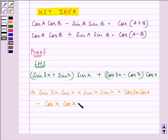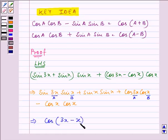Now, using the formula that is mentioned above, we can write for the first circumstance that is given to us. If we take this 3x as our A and x as our B, here we have sin A sin B plus cos A cos B and it can be written as cos A, that is 3x minus x.